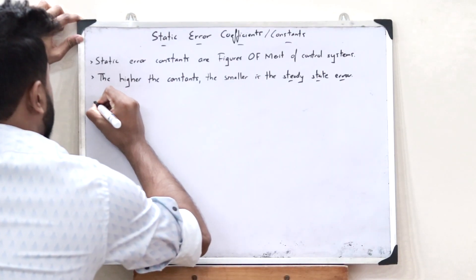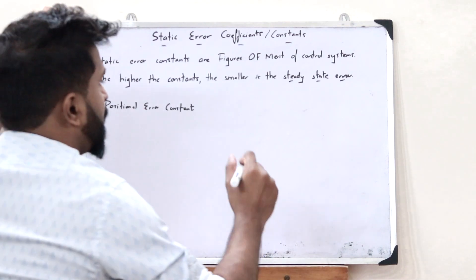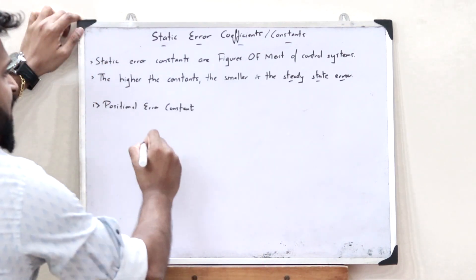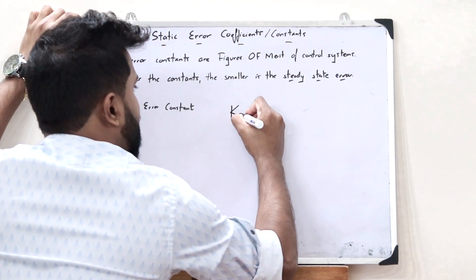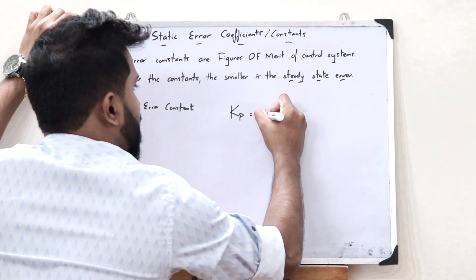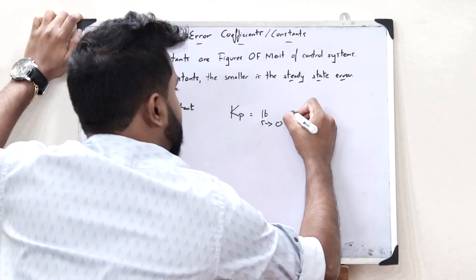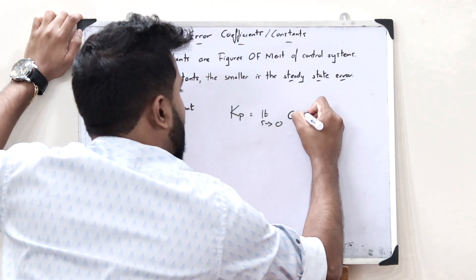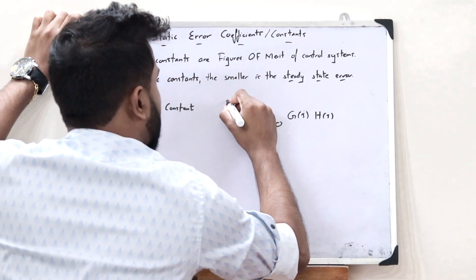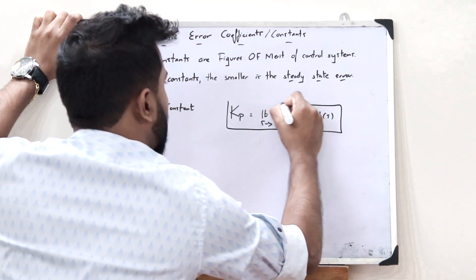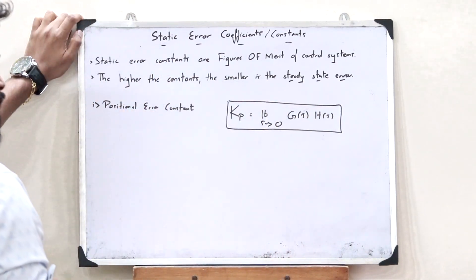First, we have the positional error constant. The positional error constant is given as Kp = lim(s→0) G(s)·H(s). This is the value of the positional error constant.